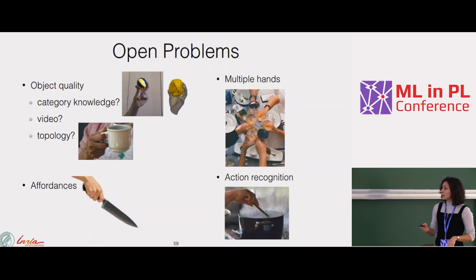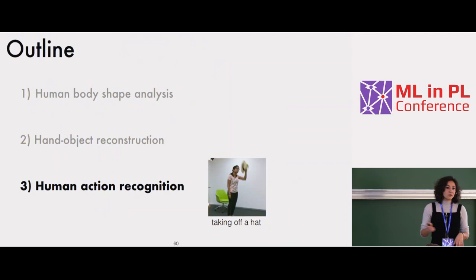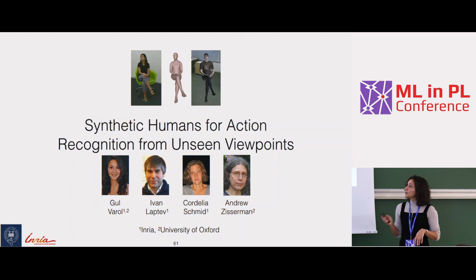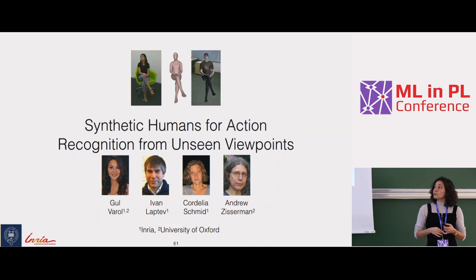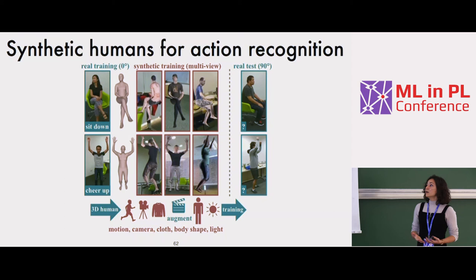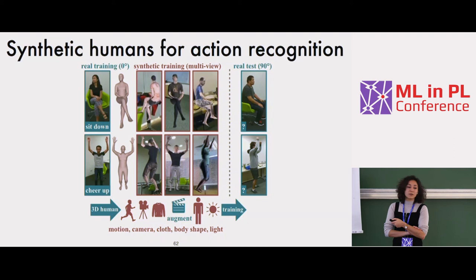Action recognition is my next and last part. This is a recent work, a collaboration between University of Oxford, RIM, and INRIA, using synthetic humans as free training data, but for action classification. The problem: you have a video with a label in your real training data, typically captured from a specific viewpoint like the front. At test time you might see a different viewpoint that you never saw in training.